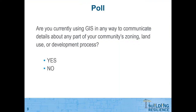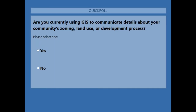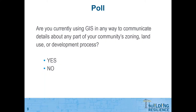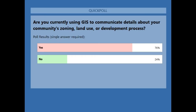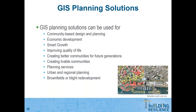Before we go further, I want to do a quick poll: Are you currently using GIS in any way to communicate details about any part of your community's zoning, land use, or development process? The poll is open — answers are flying in. We've got roughly a 75-25 split: 75% are using GIS in some way to communicate details. That's a really good response — higher than I expected. I learn something every time I do a poll.